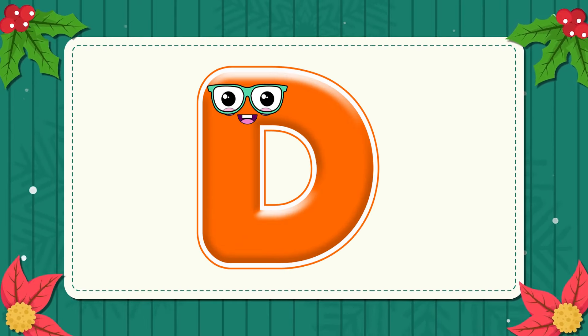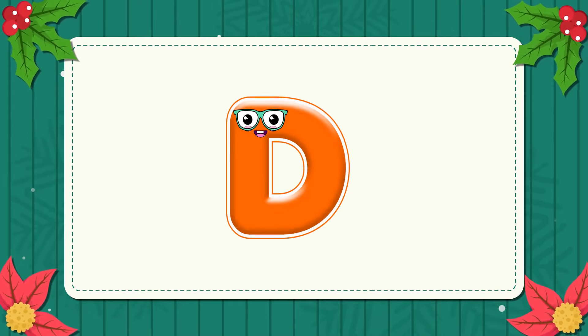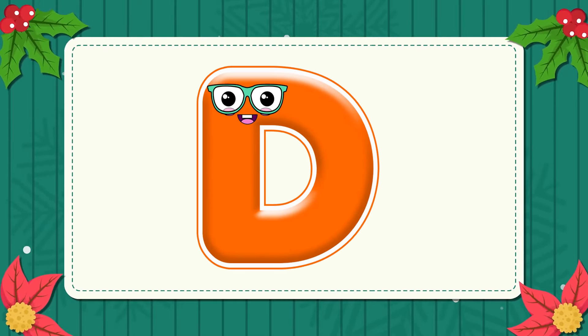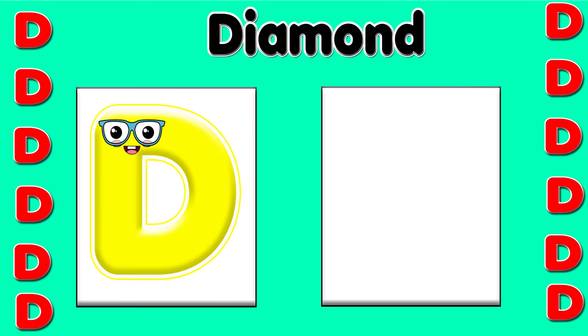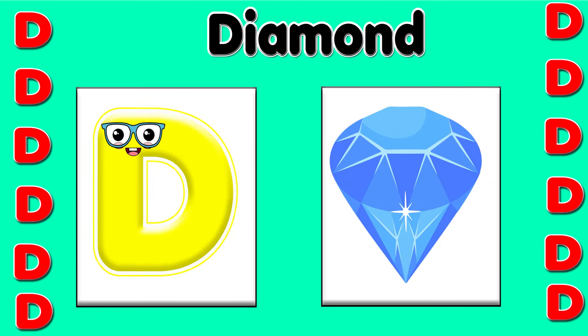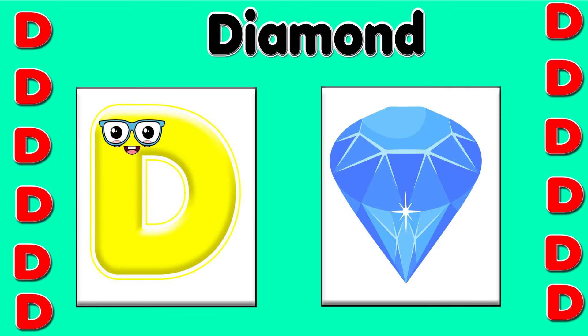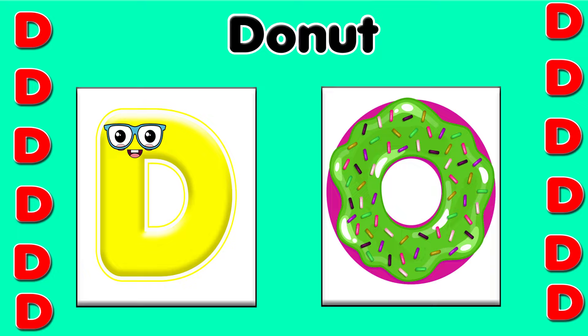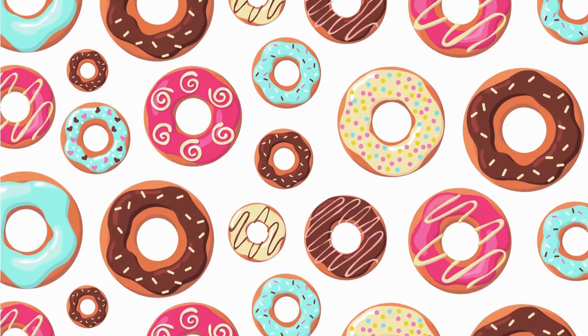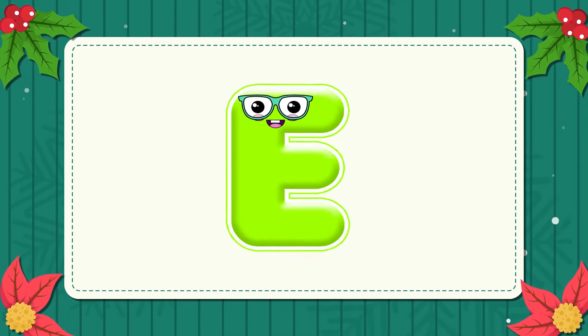D. This is the letter D. D is for diamond — d, d, diamond. D is for donut — d, d, d.